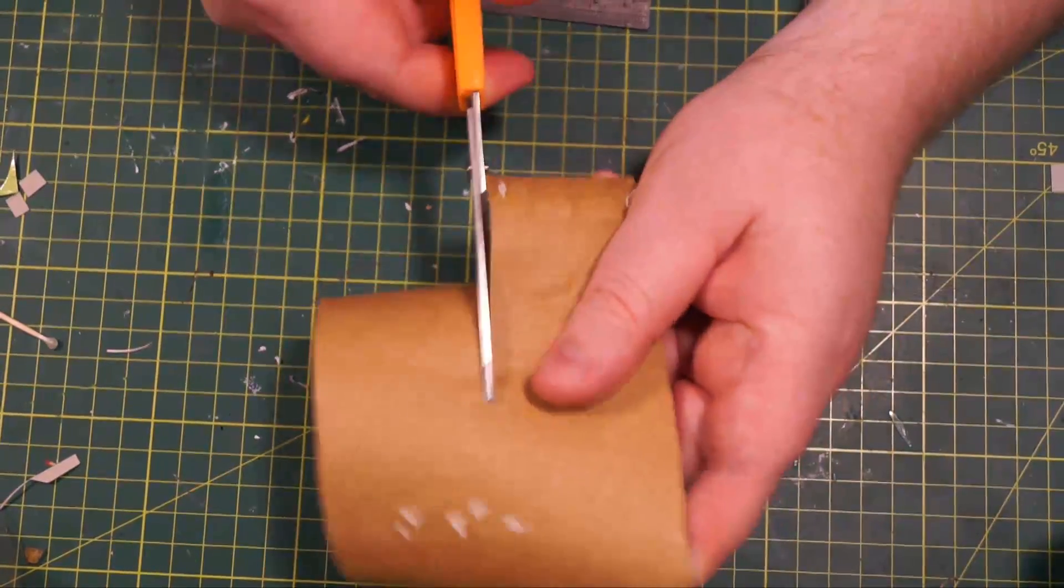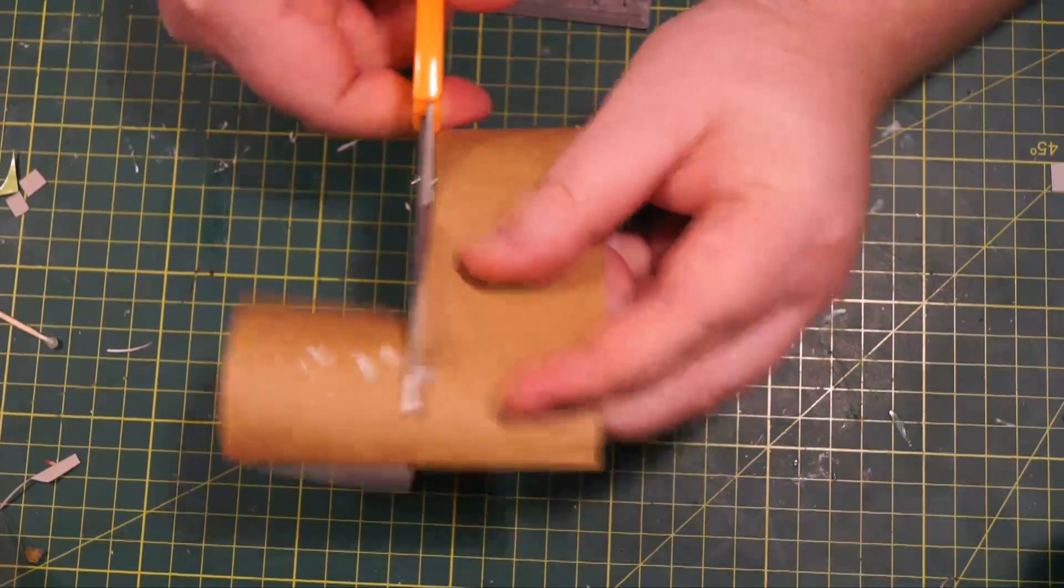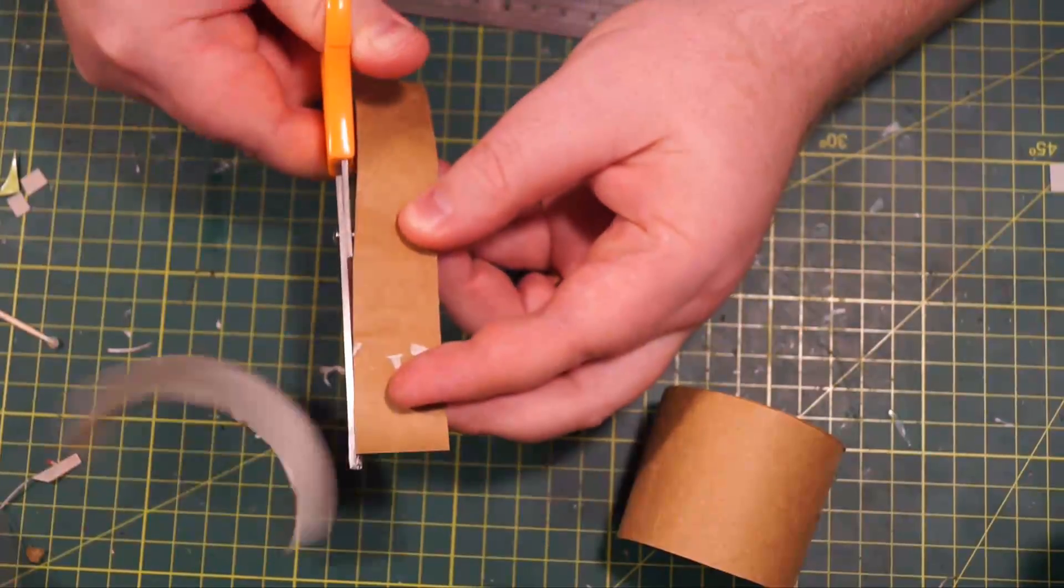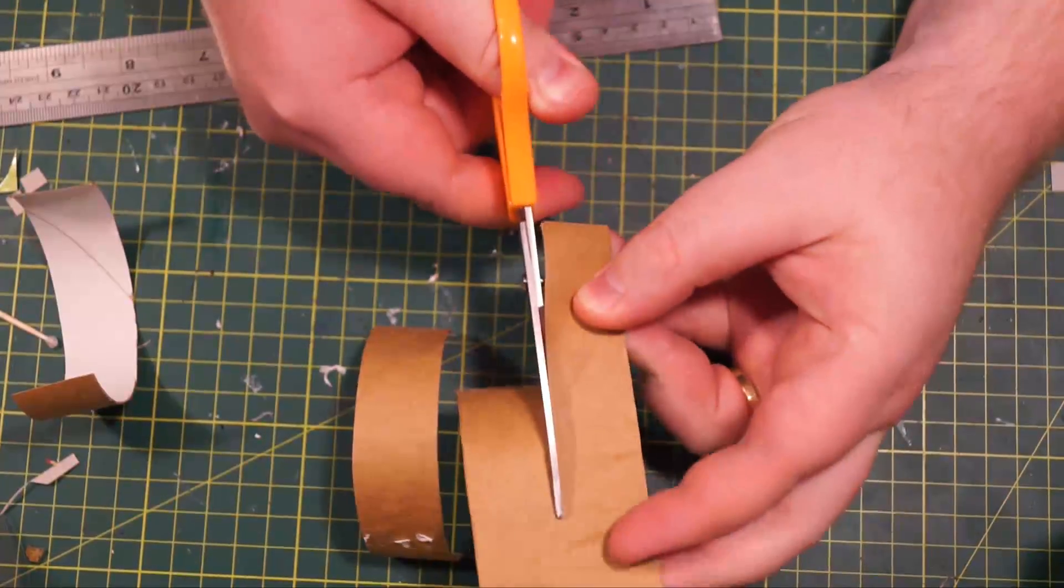Alright, then we're going to grab a pair of scissors and cut straight down the middle and then lengthways cut it in half. Then each one of those lengthways cut those in half as well.